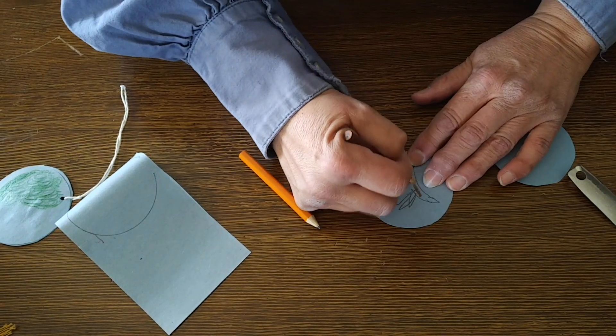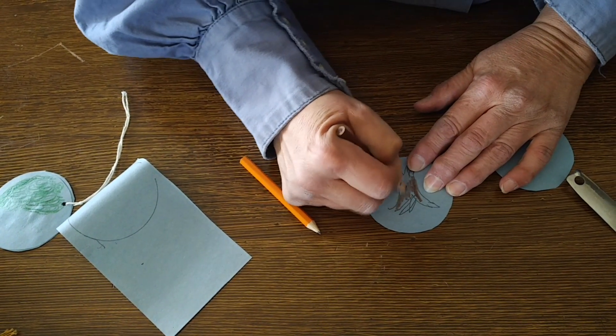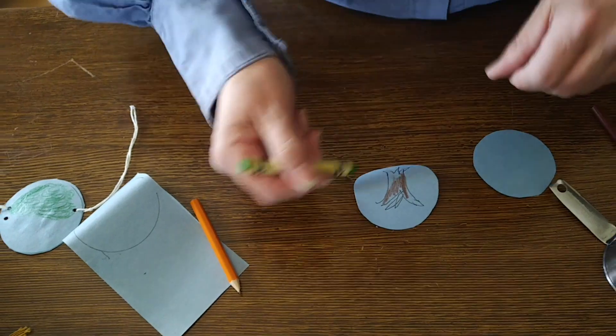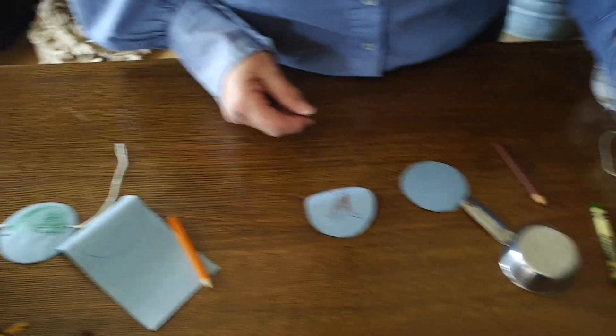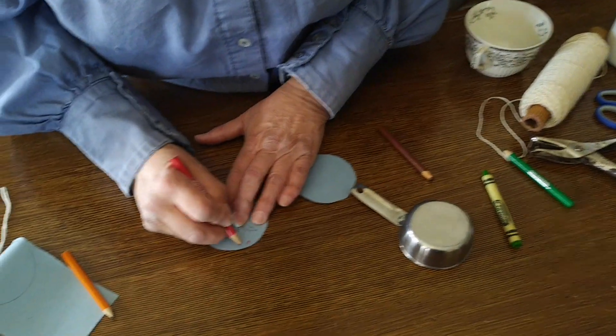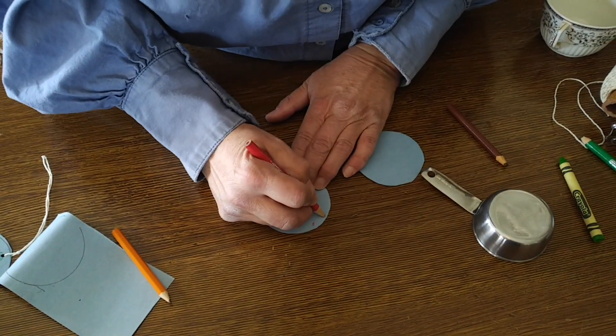And then you color. You can use pencil crayons, or crayons, or markers, whatever you have. I'm going to add some apples for my tree up here too. However you'd like to do it.